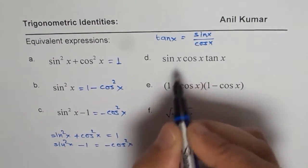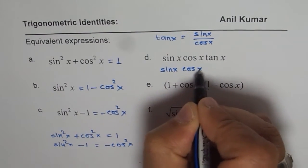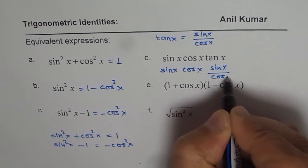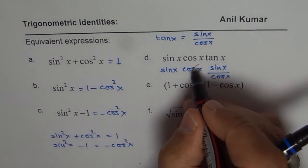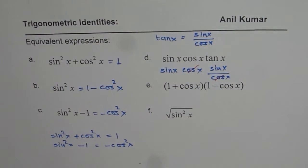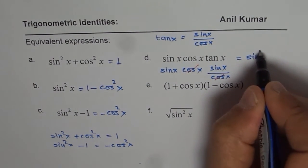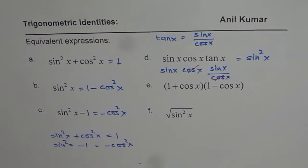So let me rewrite this particular expression. It is sine x, cos x. Tan x I am writing as sine x over cos x. Now clearly, you can see that cos x can be cancelled. Is that okay? So when you cancel this out, you are left with sine square x. So what we get here is sine square x. So this expression is equivalent to sine square x.